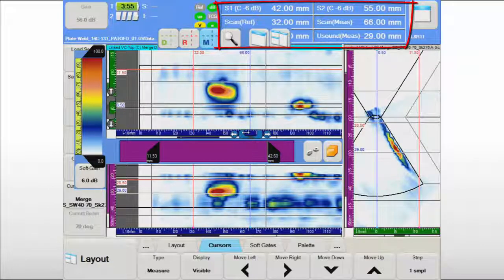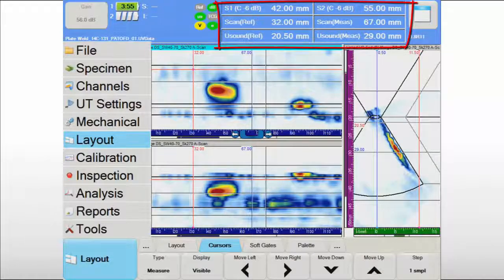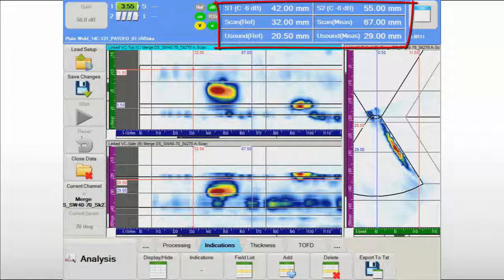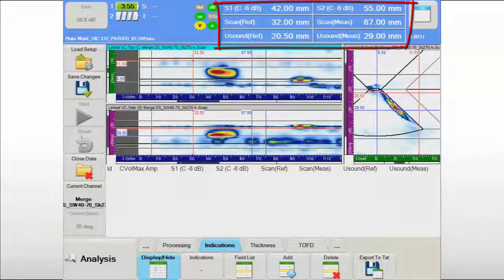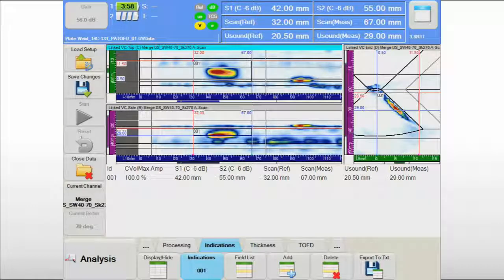Topaz 16 has powerful tools to expedite the detection and sizing process. By quickly positioning the cursors around the indication, the operator can read position and length off the information views and save the information in the indication table.